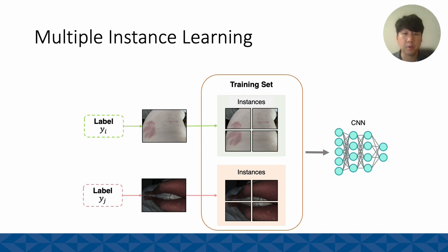In our study, we also implemented what's called multiple instance learning, which is a type of weakly supervised learning algorithm where the datasets are arranged in collections of instances called bags, and the labels are provided for each bag rather than the instances themselves. This method allows leveraging weakly labeled data, which is prominent in diverse applications such as medical imaging, video and audio processing, and document classification.